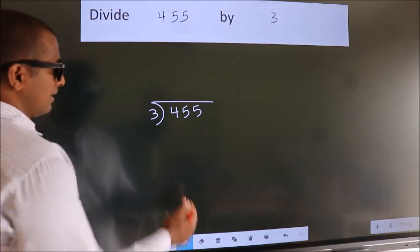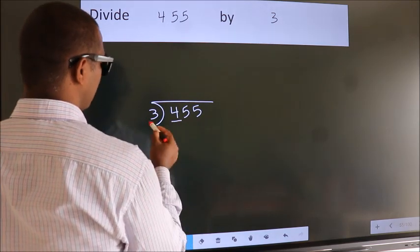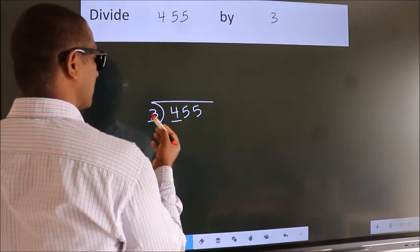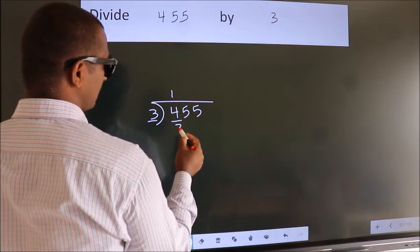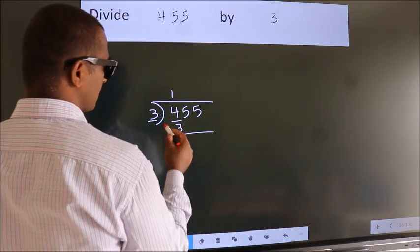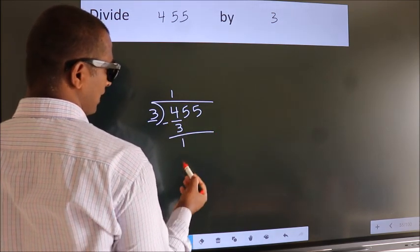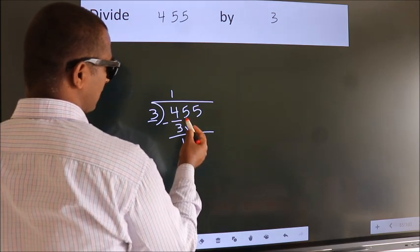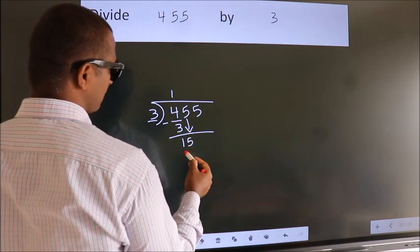Next, here we have 4, here 3. A number close to 4 in the 3 table is 3 once 3. Now we should subtract. We get 1. After this, bring down the beside number. So, 5 down. So, 15.